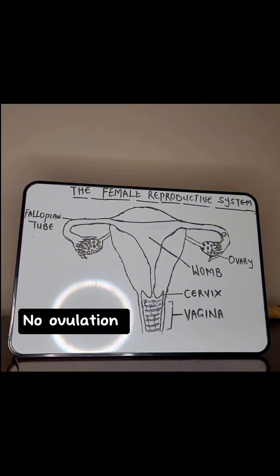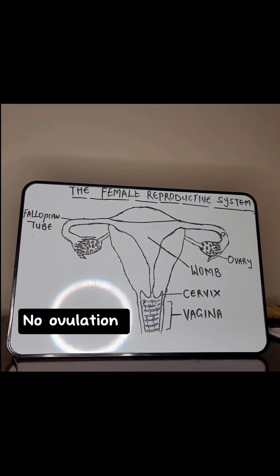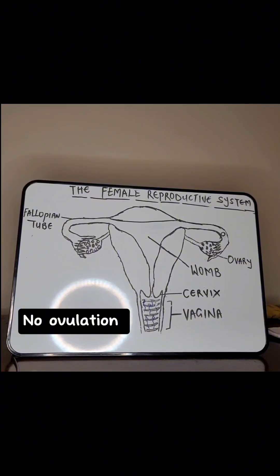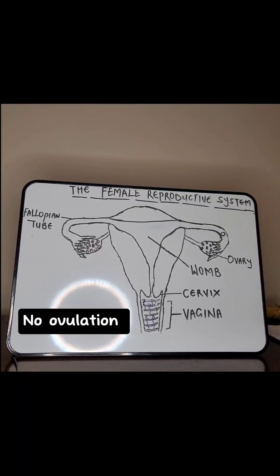Getting pregnant will be very difficult if not impossible, and there are a lot of reasons why some women don't ovulate. For example, women who have hormonal issues like PCOS or high levels of prolactin. You know your prolactin levels are high when you are not breastfeeding, not pregnant, but each time you squeeze your breasts something comes out — you need to check your prolactin levels, because if they are very high it will stop you from ovulating. Age can also be a factor.